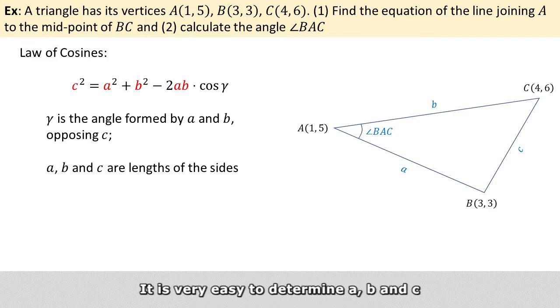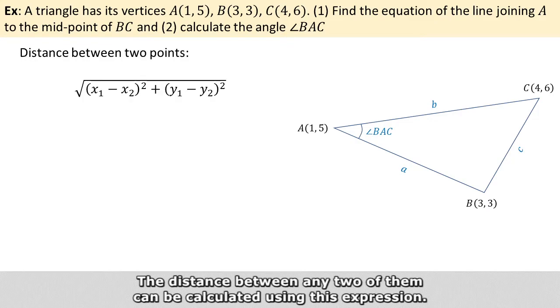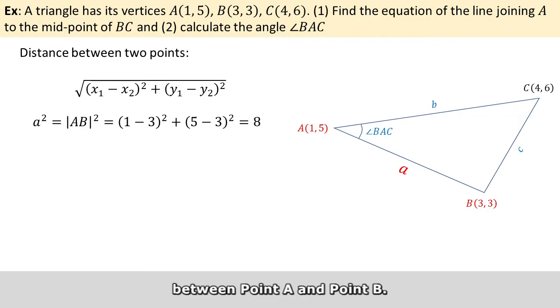It is very easy to determine A, B, and C because we already know the coordinates of the points. The distance between any two of them can be calculated using this expression. So to obtain A, we sum up the squares of the difference between X and Y respectively, between point A and point B.